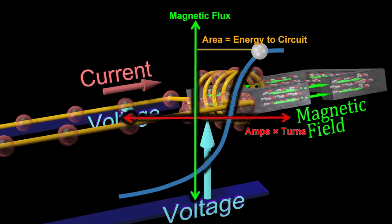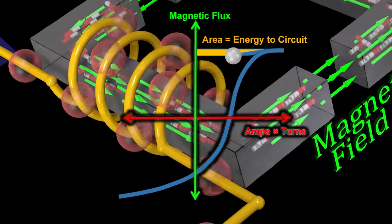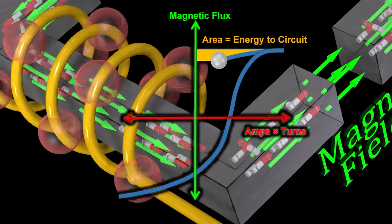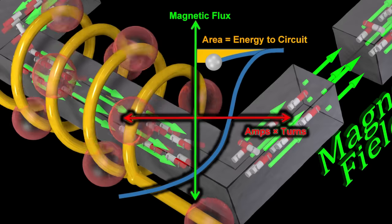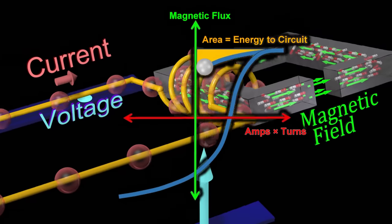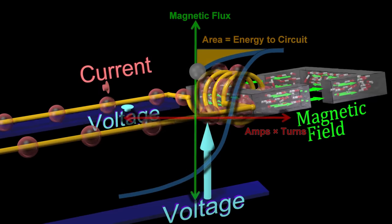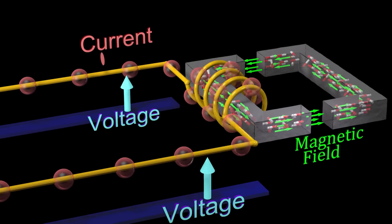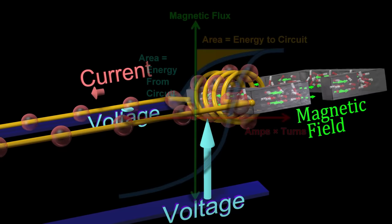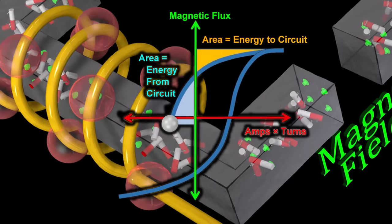Here, some of the energy stored in the magnetic field is being returned to the circuit. The energy returned from the magnetic field to the circuit is equal to the area highlighted here in orange. We can tell if energy is being returned to the circuit or if energy is being supplied from the circuit based on the direction of the current relative to the direction of the voltage difference across the coil. Here, energy is being supplied from the circuit, and the energy supplied by the circuit is equal to the area highlighted in blue.